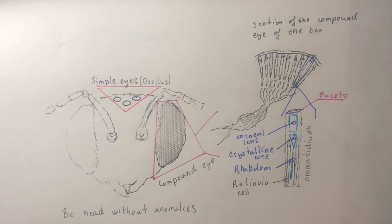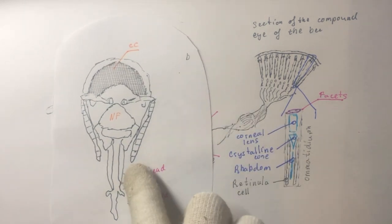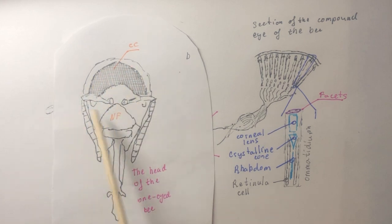However, sometimes there are bees with a single faceted eye on the forehead in the shape of a crescent. The head of such bees is noticeably narrower than usual and their internal structure differs significantly from the norm.